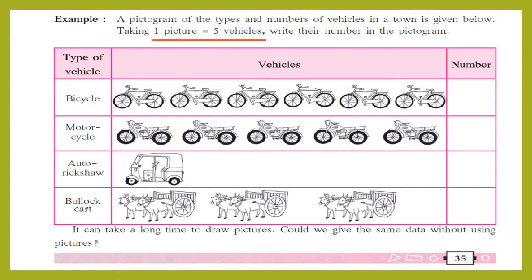How many bicycle pictograms are there, children? Count: 1, 2, 3, 4, 5, 6. Six bicycle pictograms represent how many bicycles? One picture equals five vehicles, so six multiplied by five — six fives are thirty.